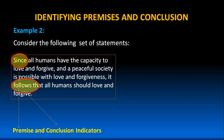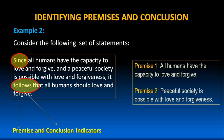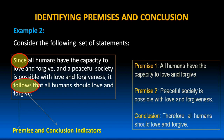The given set of statements can be rearranged in the form of premises and conclusion. Premise 1: All humans have the capacity to love and forgive. Premise 2: A peaceful society is possible with love and forgiveness. Conclusion: Therefore, all humans should love and forgive.